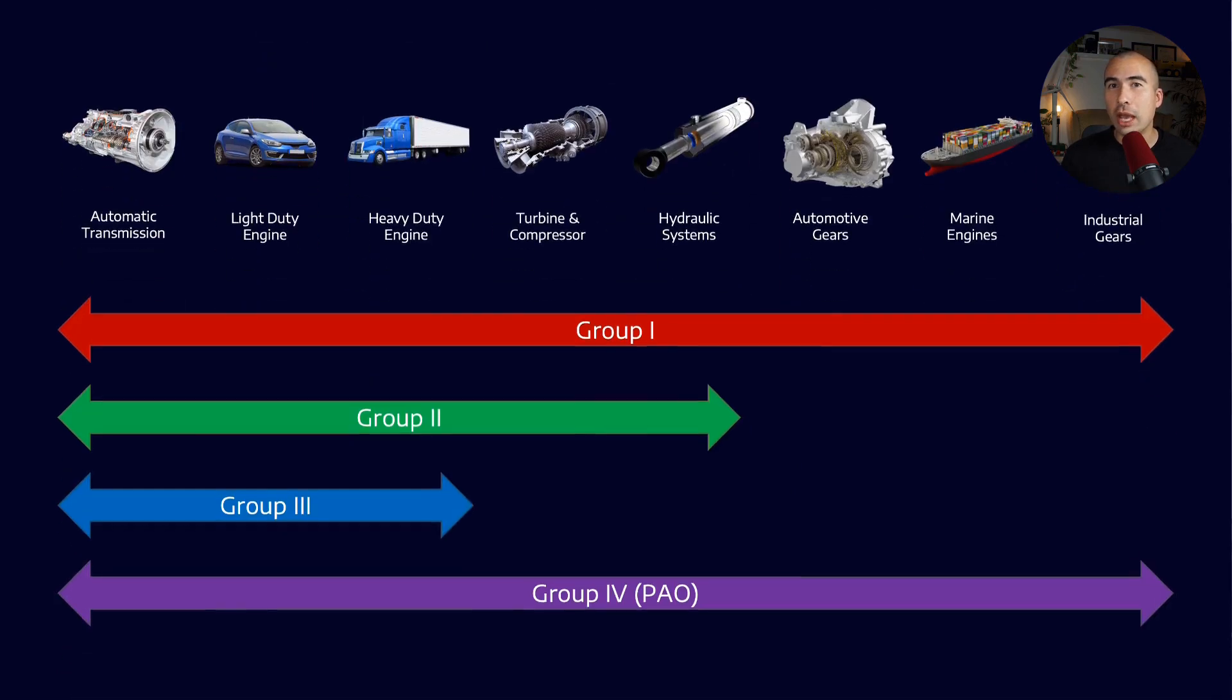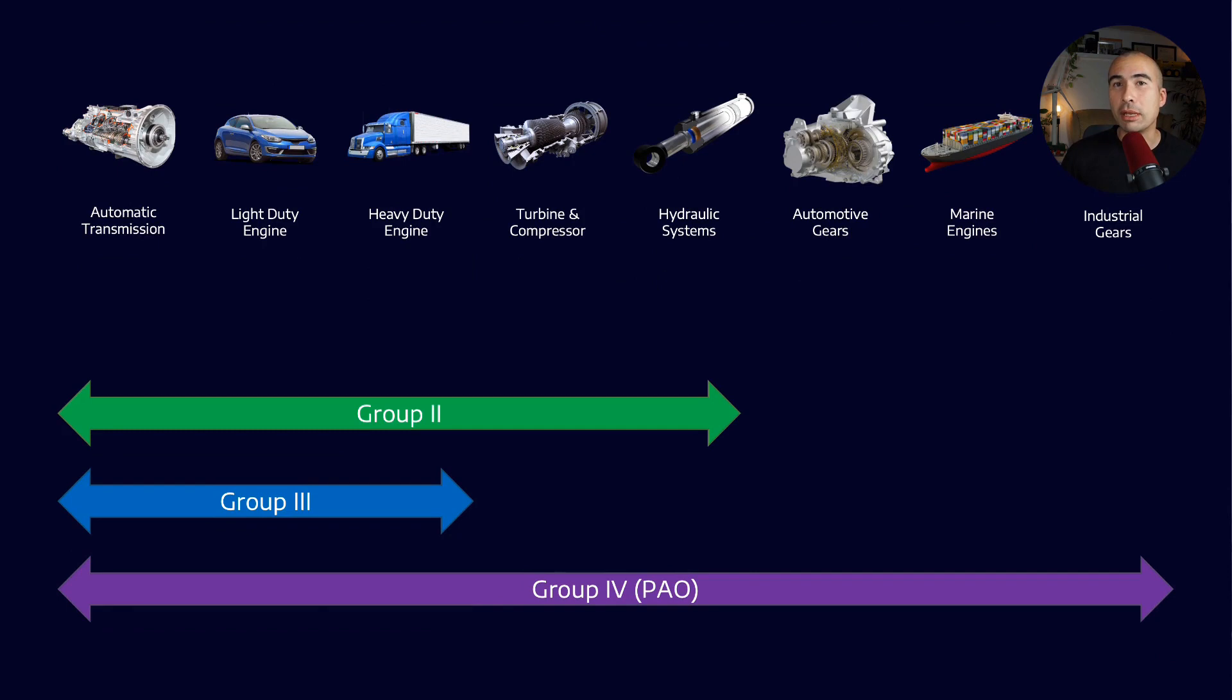Now, the challenge that we have is that Group 1 bright stocks, for a variety of market reasons, are disappearing from the base stock market. That's a real problem because it leaves a huge gap where we could either use Group 2s and put a lot of polybutenes in to increase the viscosity, but that becomes a quite expensive exercise, or we're forced into using PAOs, which are available in a much wider viscosity range.